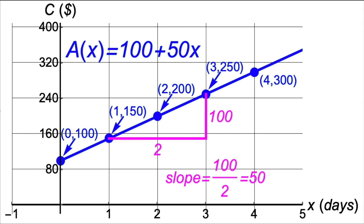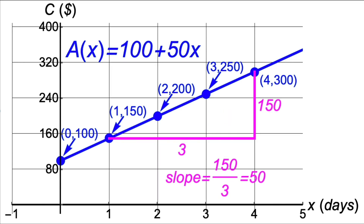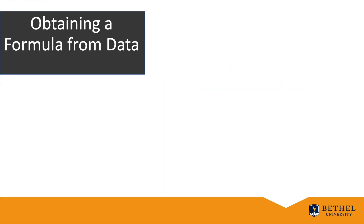If we pick a different right triangle, it will be similar to the original — same angles and same corresponding ratios of side lengths. The ratio 100/2 still simplifies to $50 per day. Any similar right triangle gives the same ratio. This observation leads us to a general approach for finding formulas for linear functions given two data points.